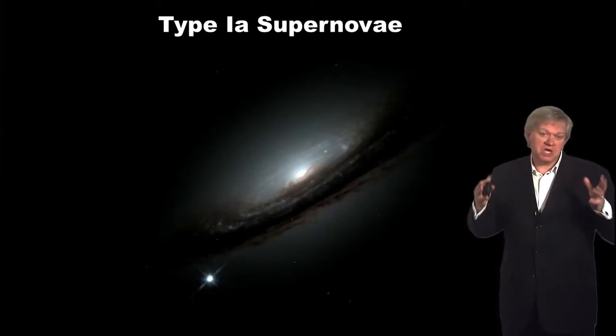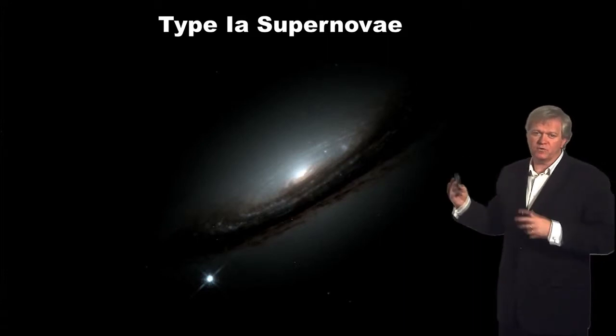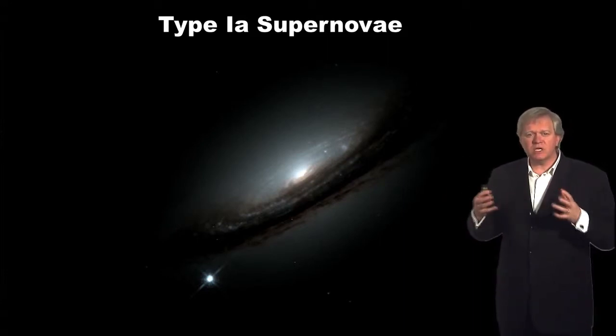So to measure the universe, we need to look back in time. But when we look back in time, we're looking far away, which means we're looking to things that are going to appear much, much fainter than they do nearby. So we need something bright. And the brightest thing that we know of in the nearby universe are type Ia supernovae. These are exploding stars.